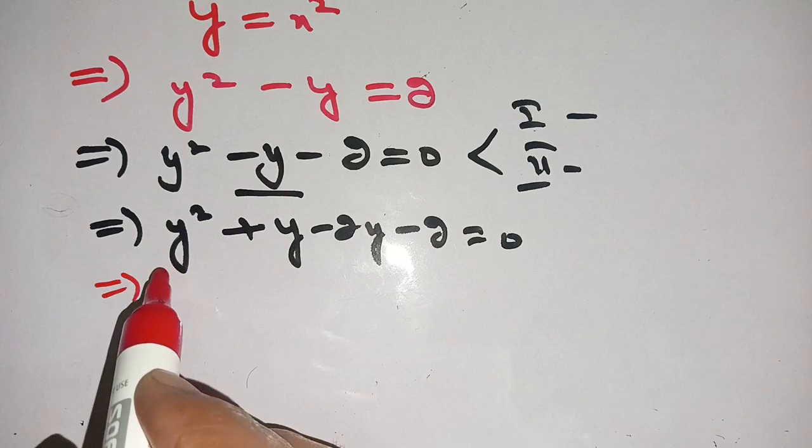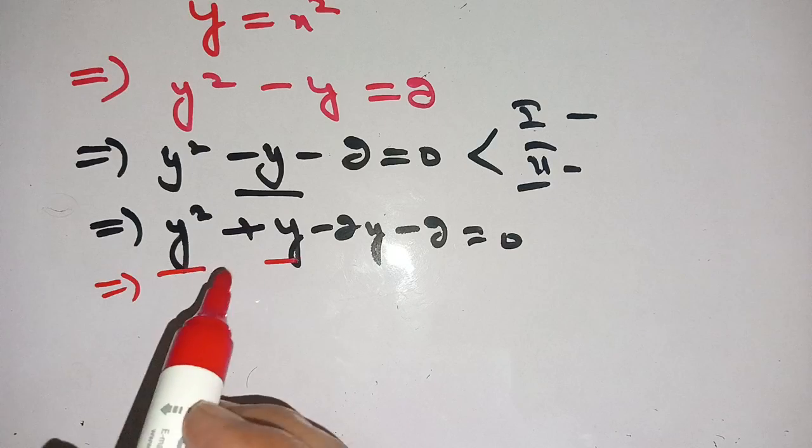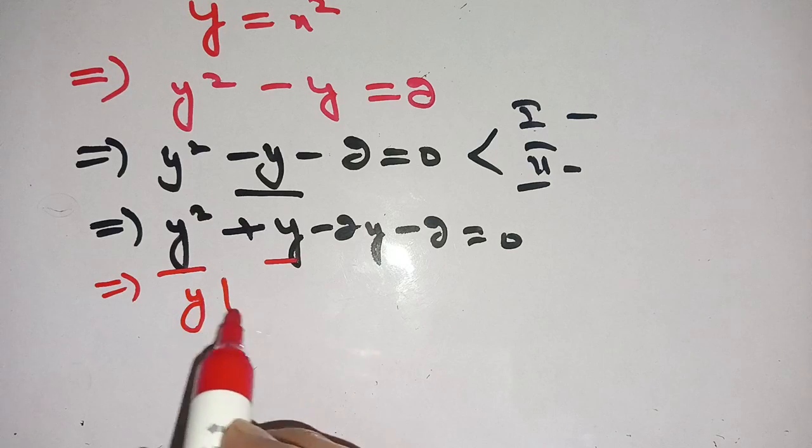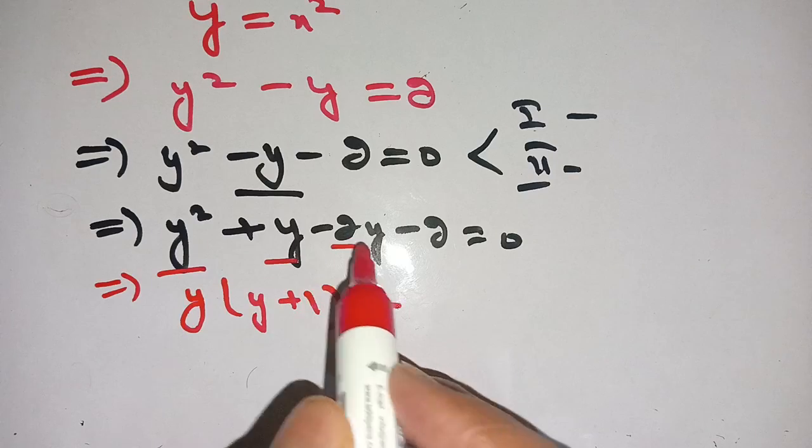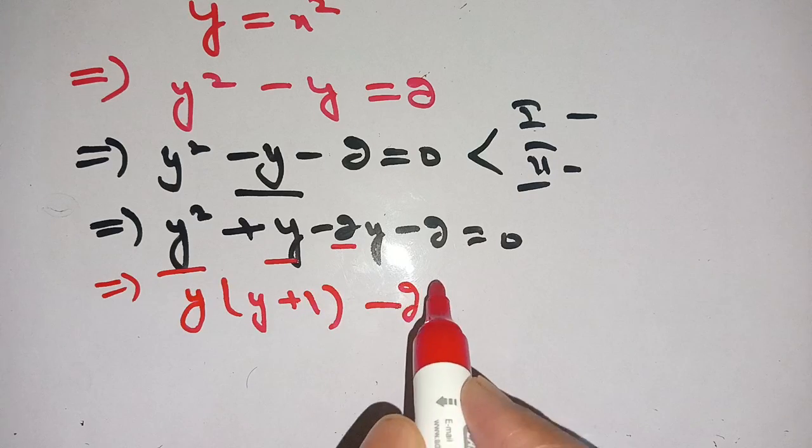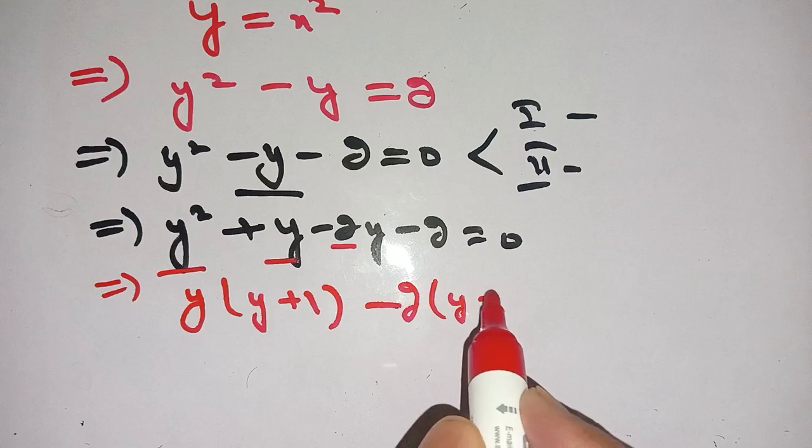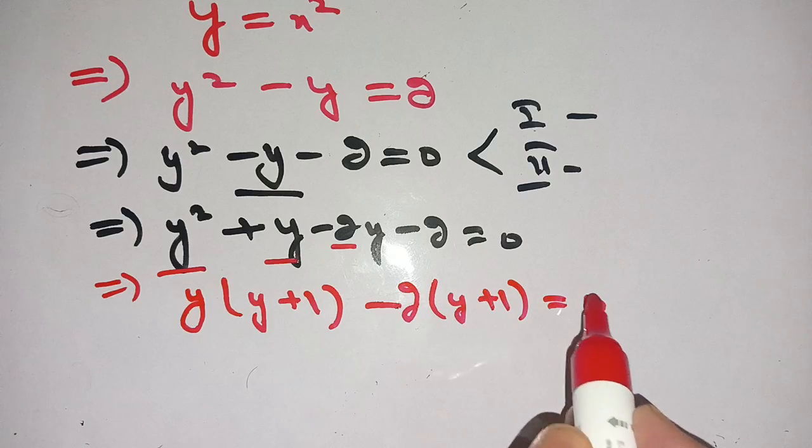We take out y from this term and this term. We get y times y plus 1. Here, 2 is taken out, we get minus 2, and remaining is y plus 1, is equal to 0.